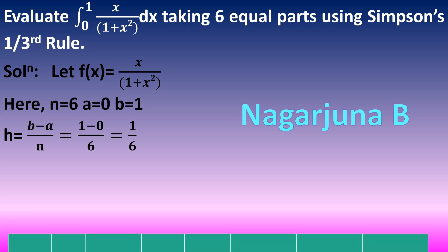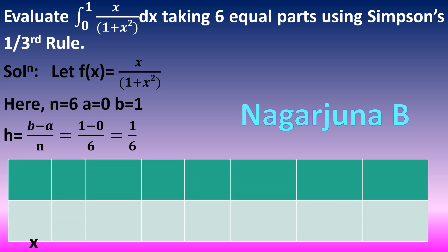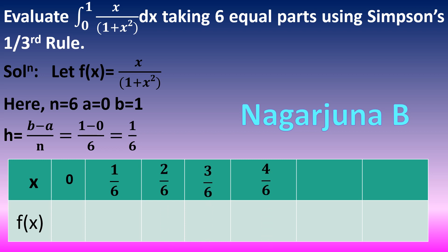Now prepare a table of x and f of x values. The initial x value is 0. Next, 0 plus 1 by 6 equals 1 by 6. Then 2 by 6, 3 by 6, 4 by 6, 5 by 6, and 6 by 6, which is 1 — the upper limit. You need to stop at that point.